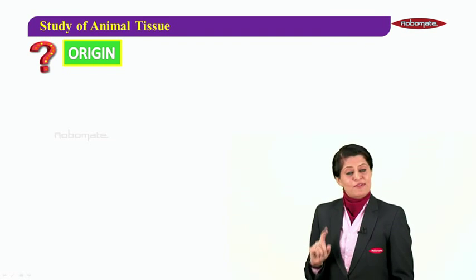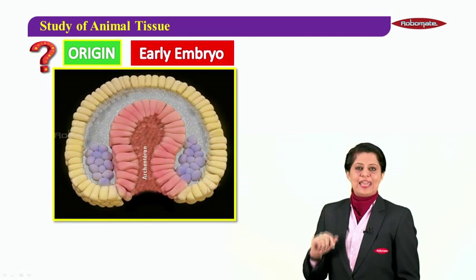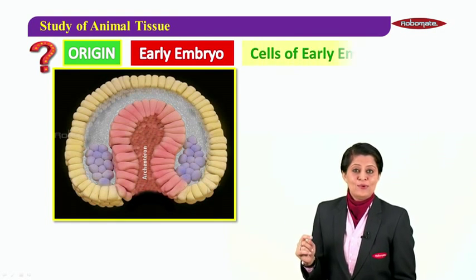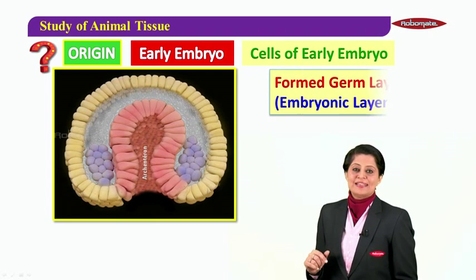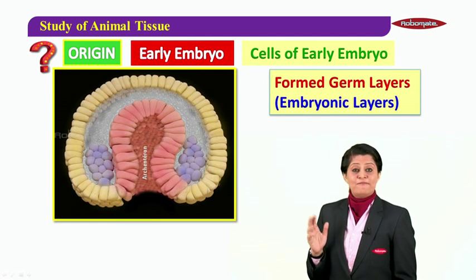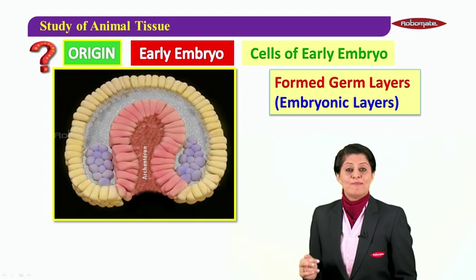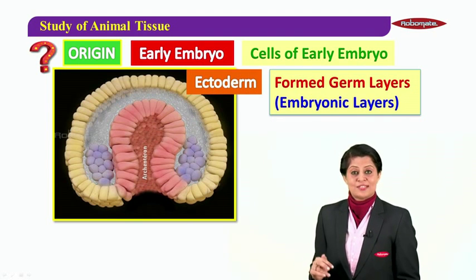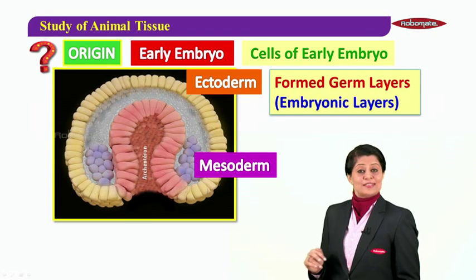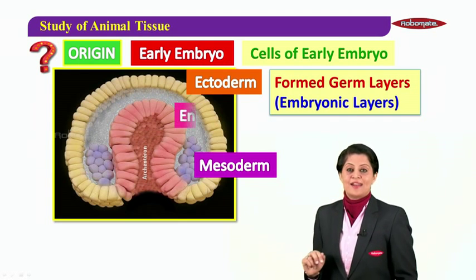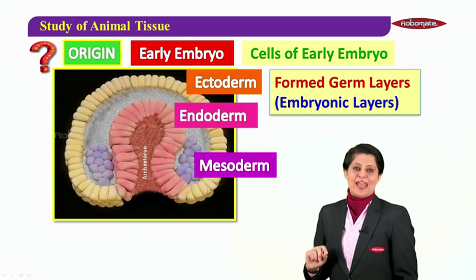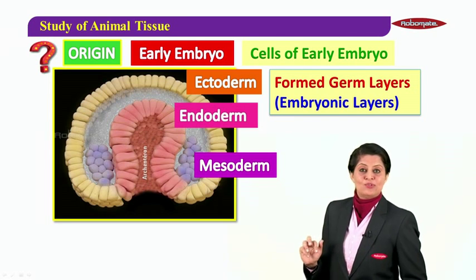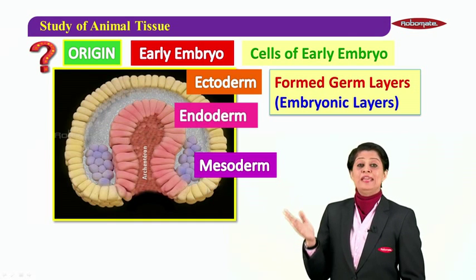When we talk about origin, we go back to when you were an early embryo in your mother's womb. At that stage, cells were present in the form of germ layers, also known as embryonic layers. You can see the layers in the picture: the outermost layer is the ectoderm, the middle layer is the mesoderm, and the innermost layer is the endoderm.